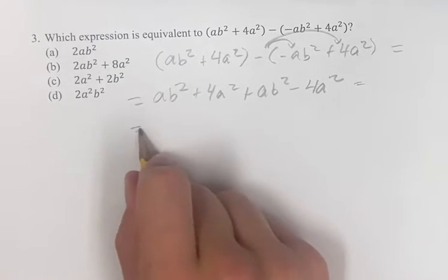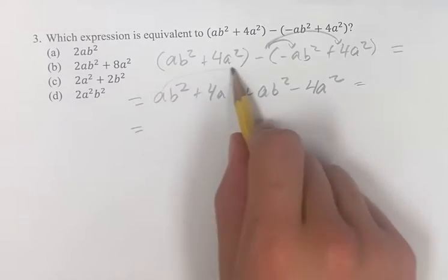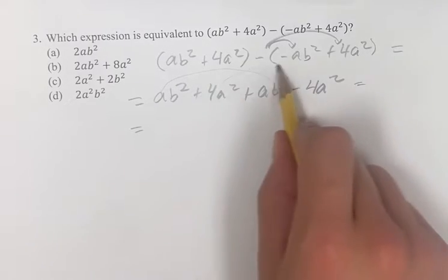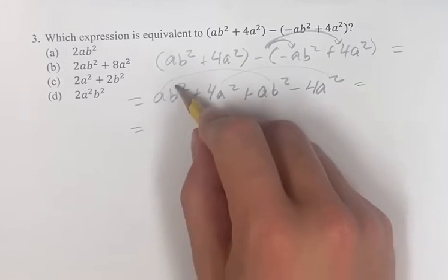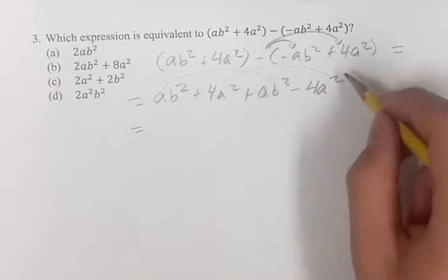Now we're going to be adding like terms together. So these two are the same, and these two are the same. Notice that's because they have the same variables for these two pairs.